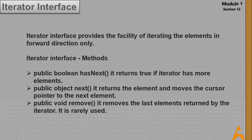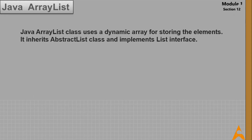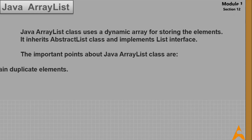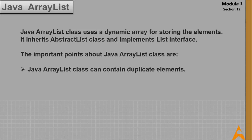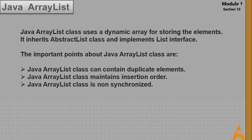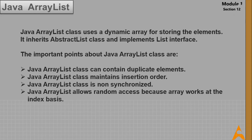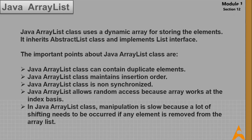Now let's see the first class of collections — ArrayList. Java ArrayList class uses a dynamic array for storing elements. It inherits AbstractList class and implements the List interface. Key points: ArrayList can contain duplicate elements, maintains insertion order, is non-synchronized, allows random access because array works on an index basis, and manipulation is slow because a lot of shifting needs to occur if any element is removed.